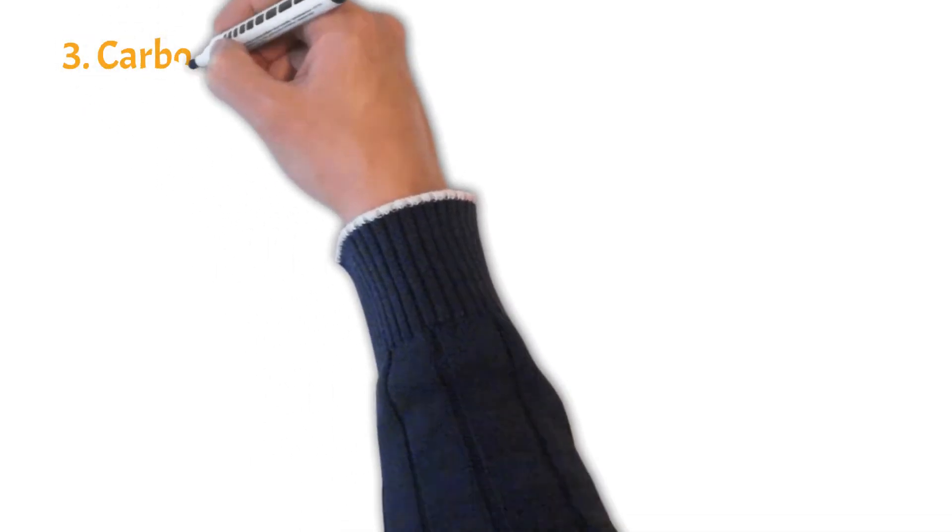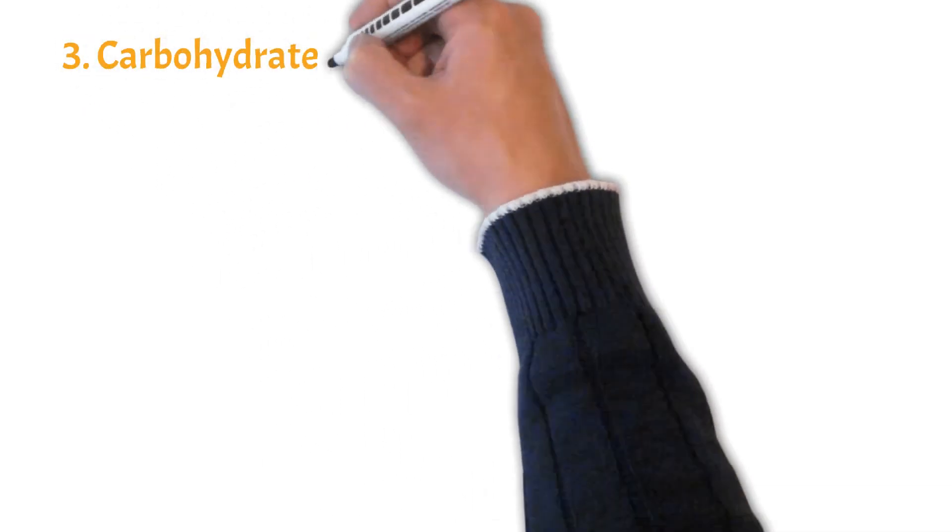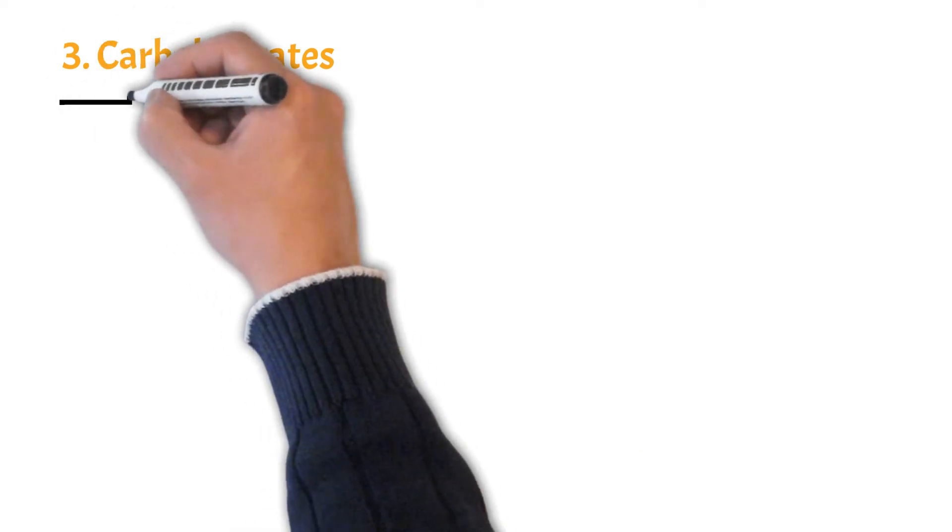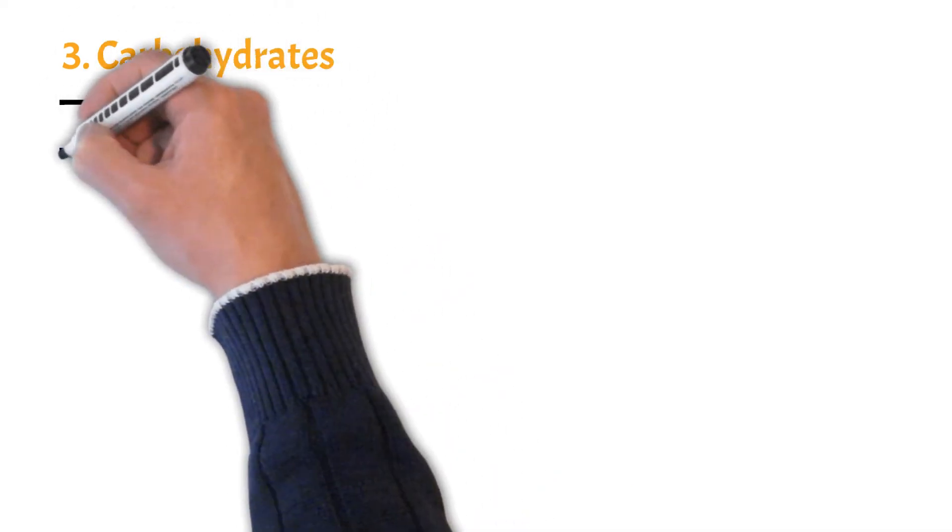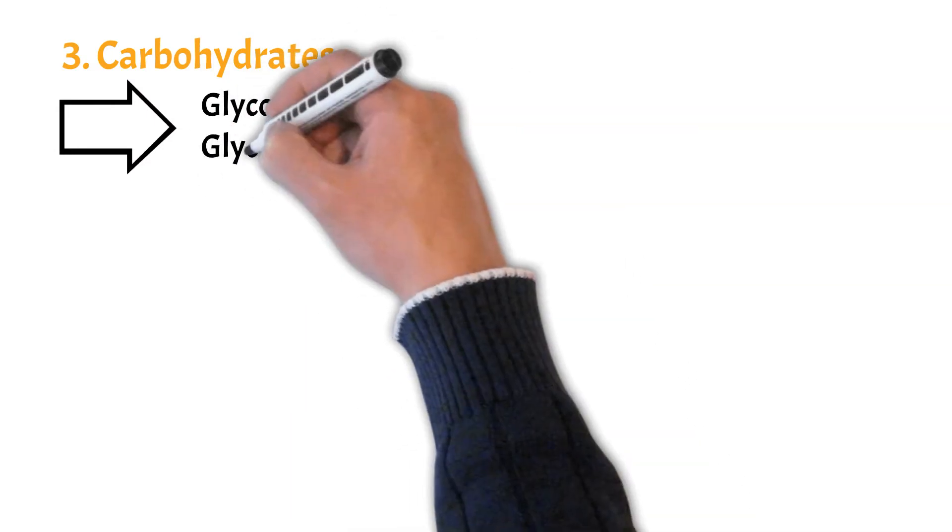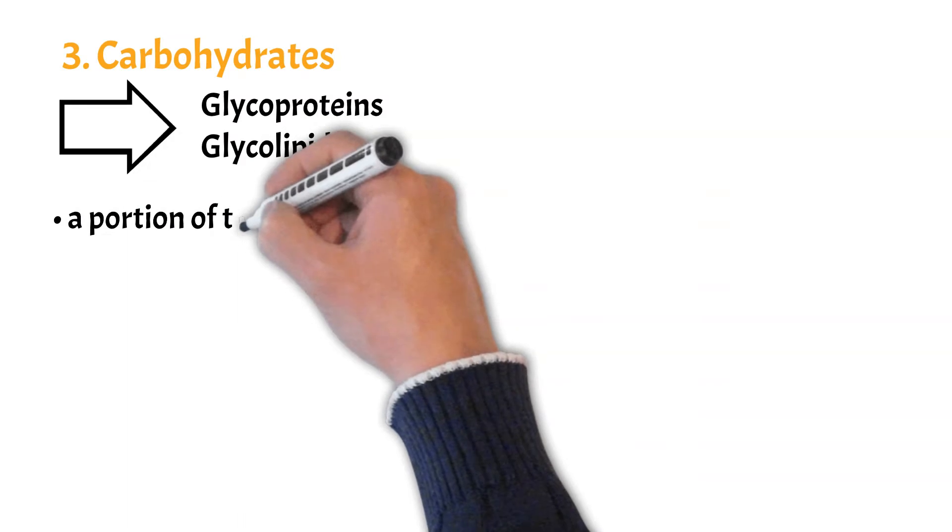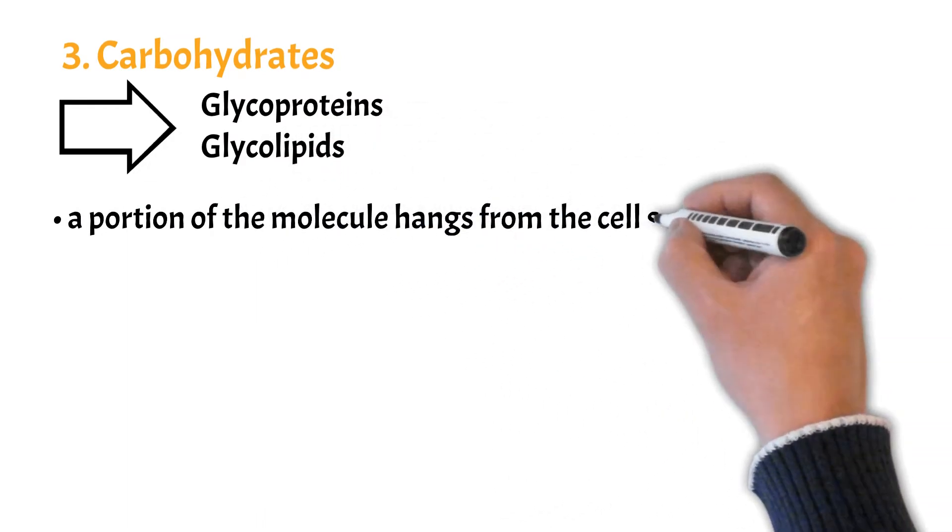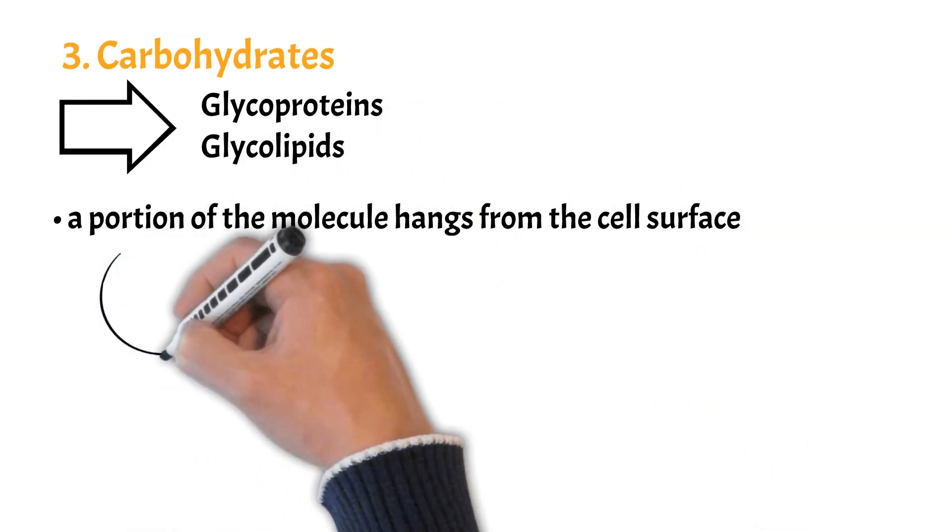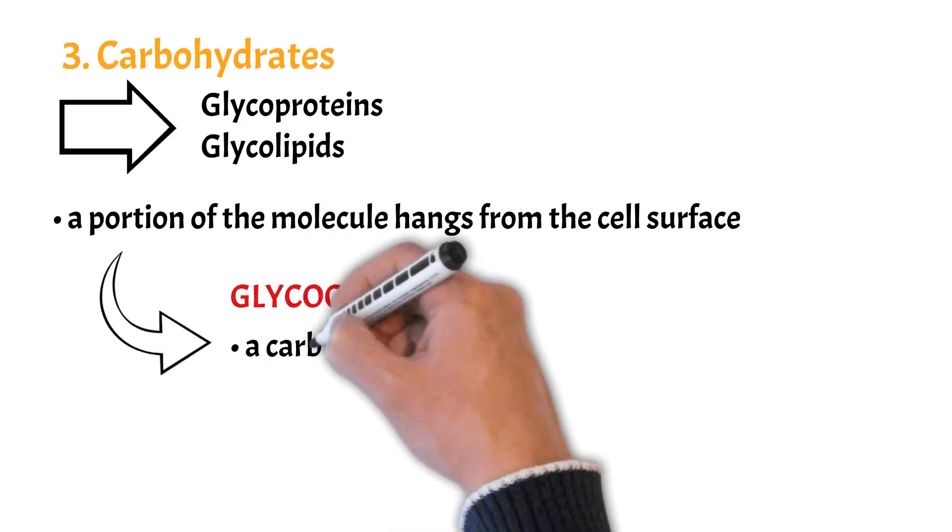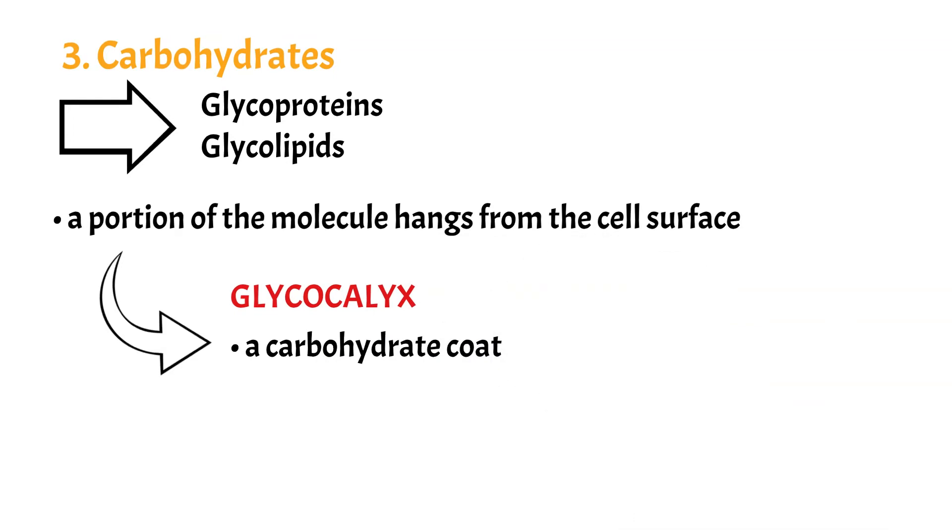However, there's one more important substance in the cell membrane: carbohydrates. Membrane carbohydrates are found almost always in combination with proteins or lipids as glycoproteins or glycolipids. One portion of their molecules hangs from the cell surface. These portions create the so-called glycocalyx, a loose carbohydrate coat around the entire cell.